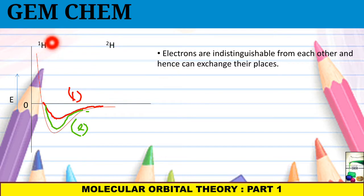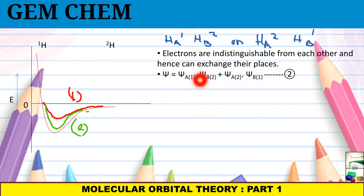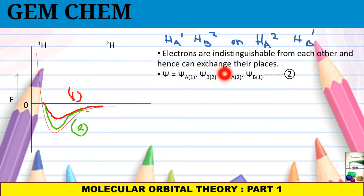The electron present in atom A can also be present in atom B, and vice versa. So we can write two cases: HA contains electron 1 and HB contains electron 2, and also HA contains electron 2 while HB contains electron 1. From this, the concept of a total wave function is obtained, which sums both cases — the products of the two configurations — giving us our updated wave function equation.